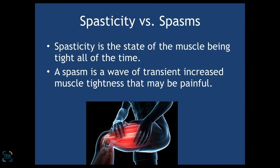So what is spasticity versus a spasm? You may have both. Spasticity means the chronic state of your muscle being too tight — too tight all of the time. A spasm is a wave of increased muscle tone. You could have an extensor spasm so your legs stiffen out, a flexor spasm so your arms tighten up, or extensor spasms in your trunk. Typically spasms are uncomfortable if not outright painful.